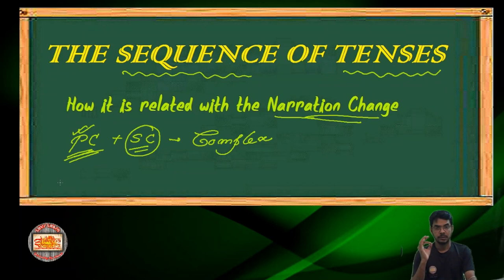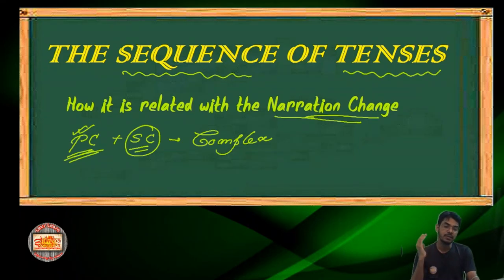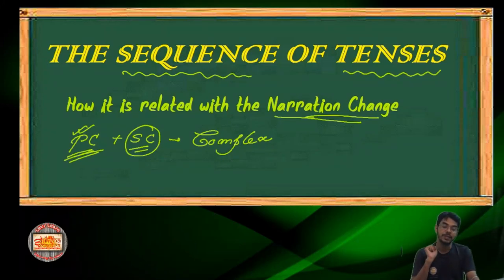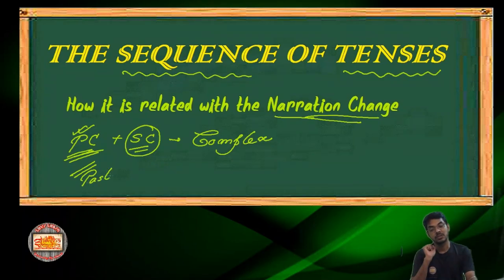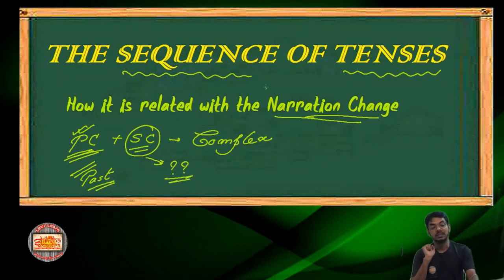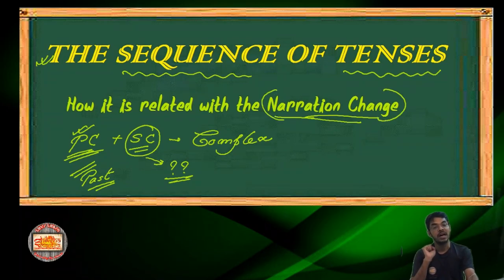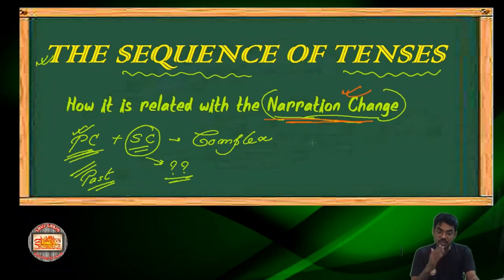If you notice which tense we are using in the principal clause, you can detect very easily which tense we use in the subordinate clause, and that balance is called the sequence of tenses. That means, when the principal clause is in past, present, or future, which tense follows for the subordinate clause — that's the sequence of tenses. In our later stages of learning, we learn how it's handy for narration change.